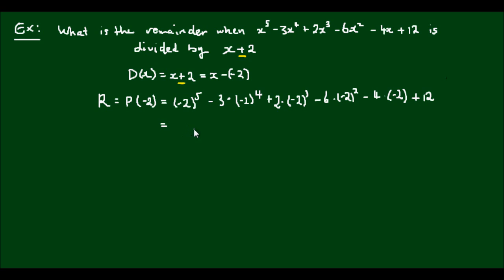So negative 2 to the 5th is negative 32, and it's negative because the power is an odd number. Negative 2 to the 4th is 16, 16 times 3 is 48. And because we have an even number here, negative 2 to the power of 4 is positive 16. Negative 2 to the power of 3 is negative 8 times 2, gives us negative 16.